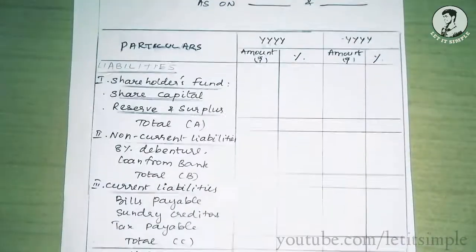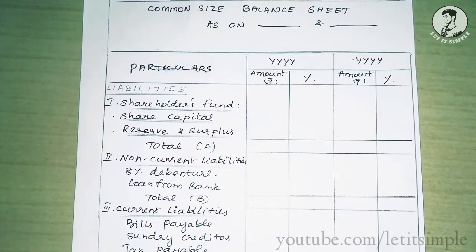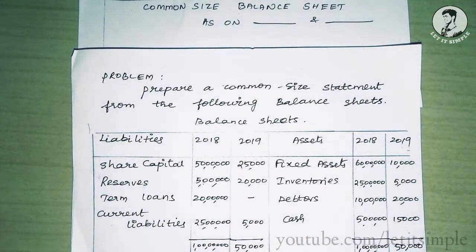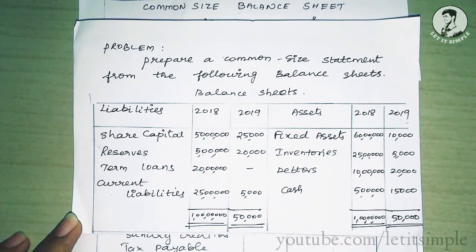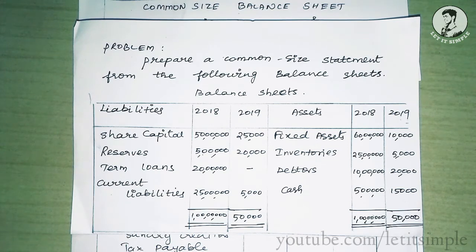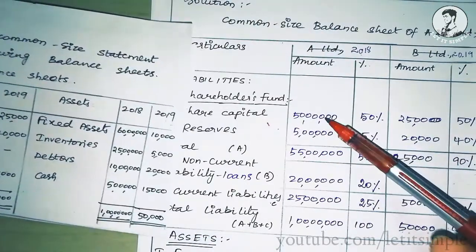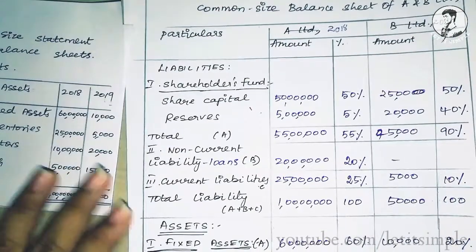How do we prepare the balance sheet? Share capital and reserves: 5 lakh, 5 lakh. Share capital and reserves are entered accordingly.